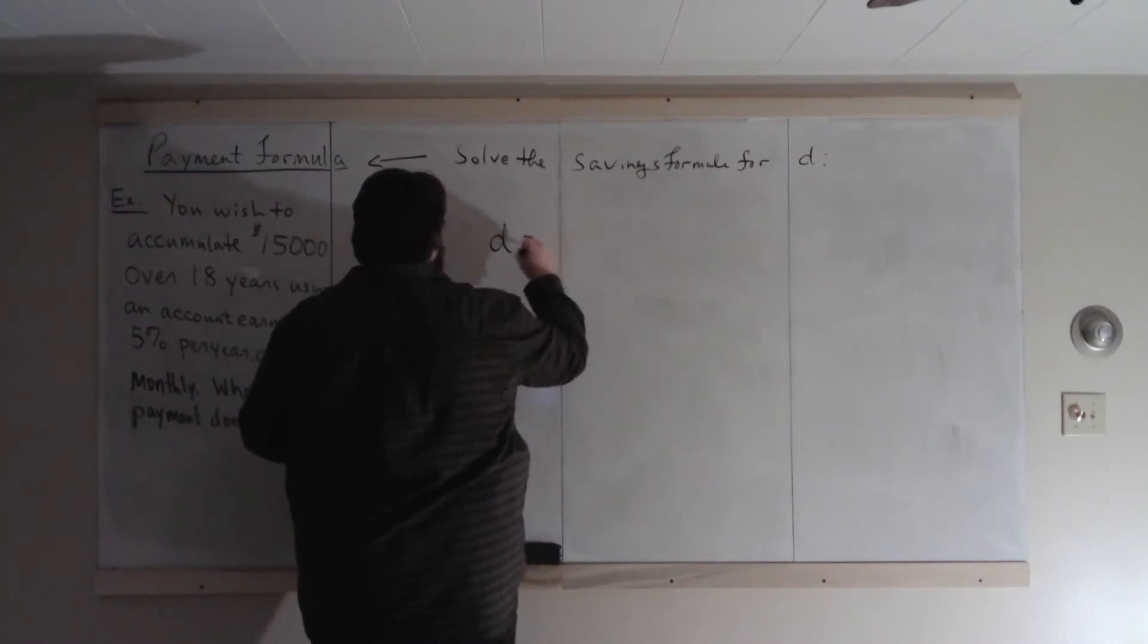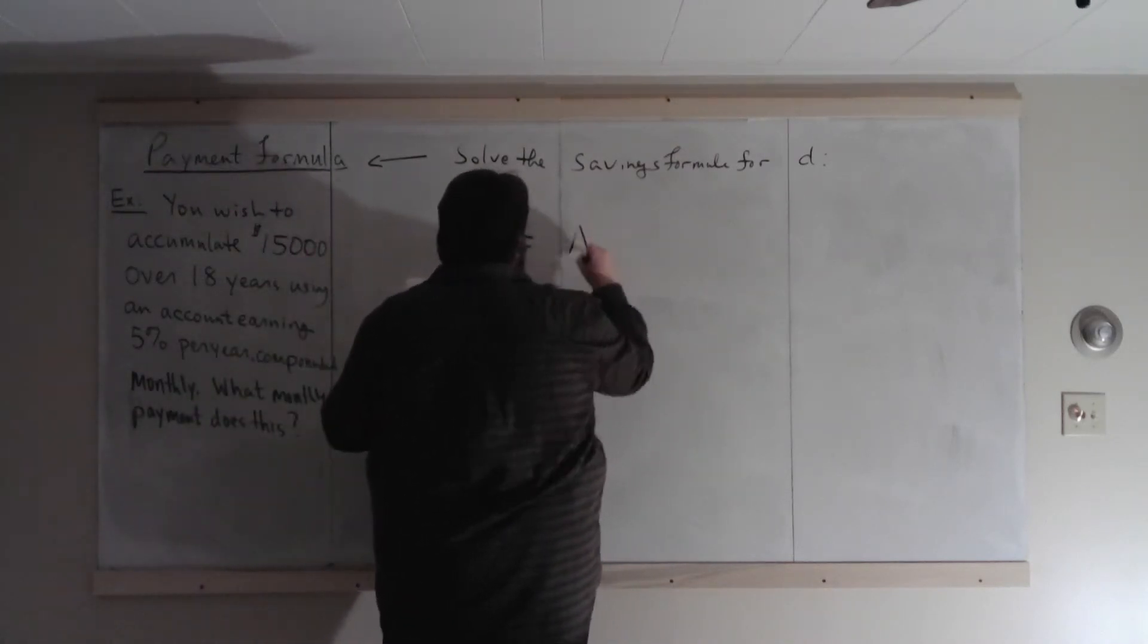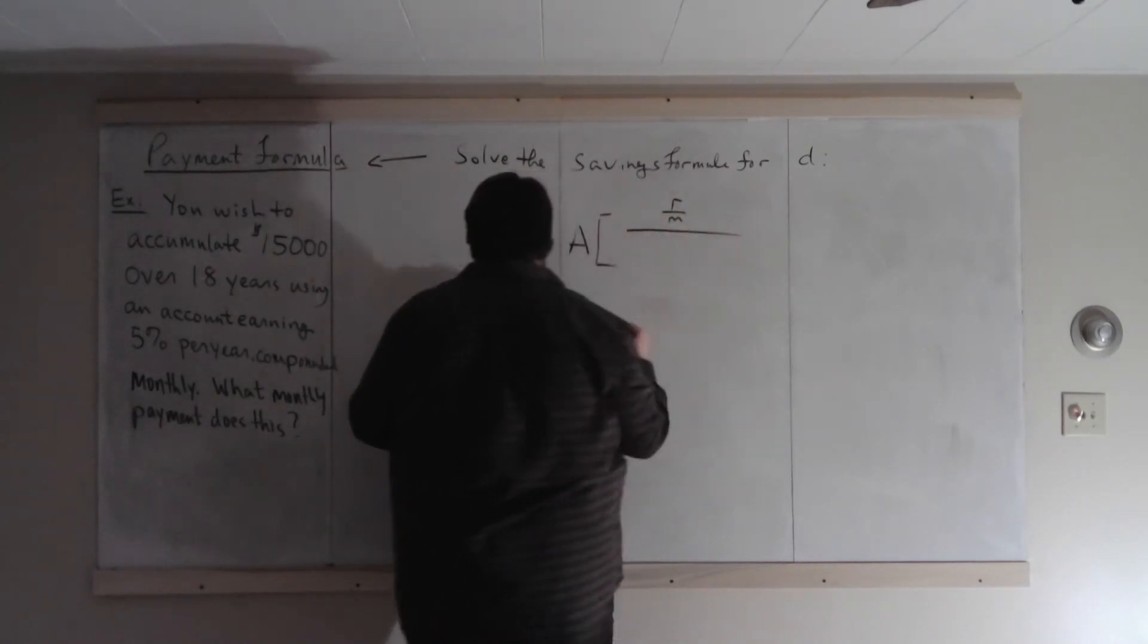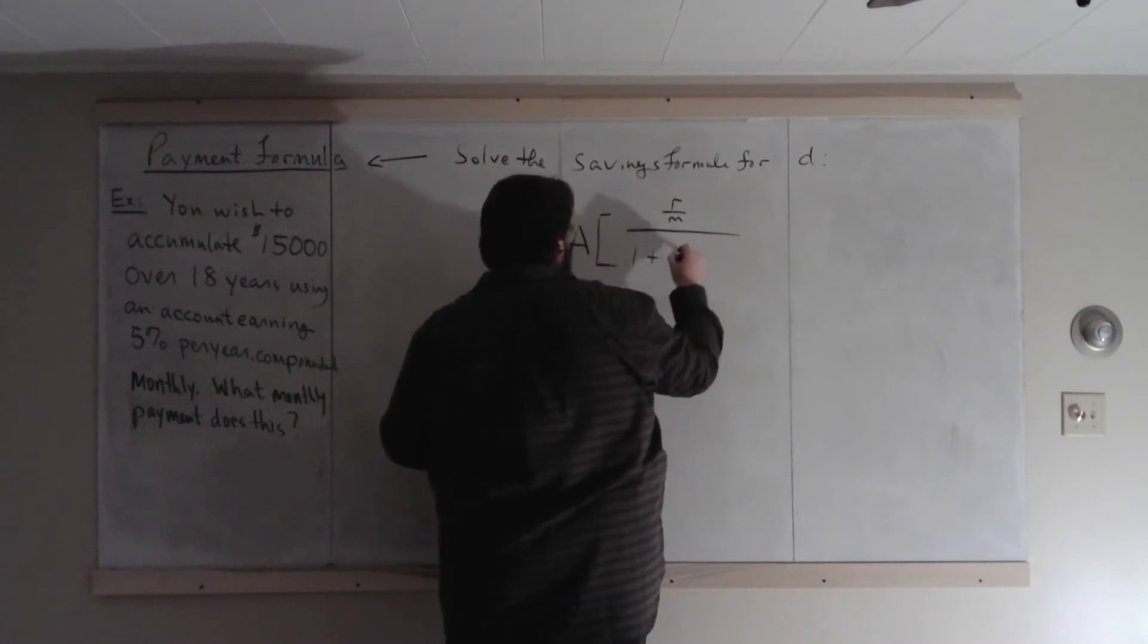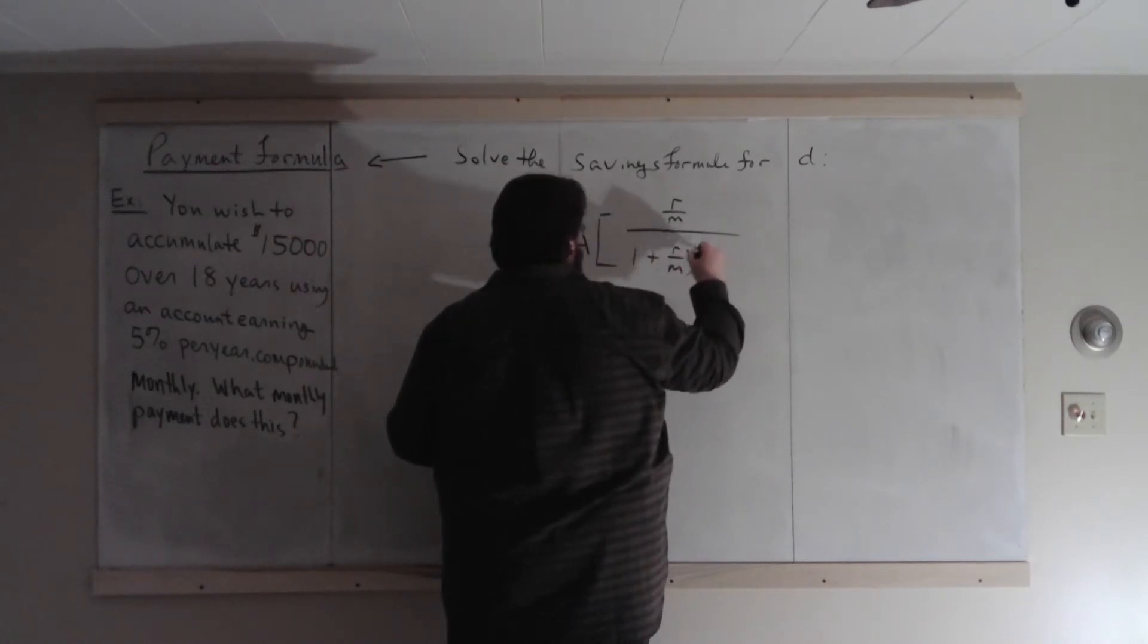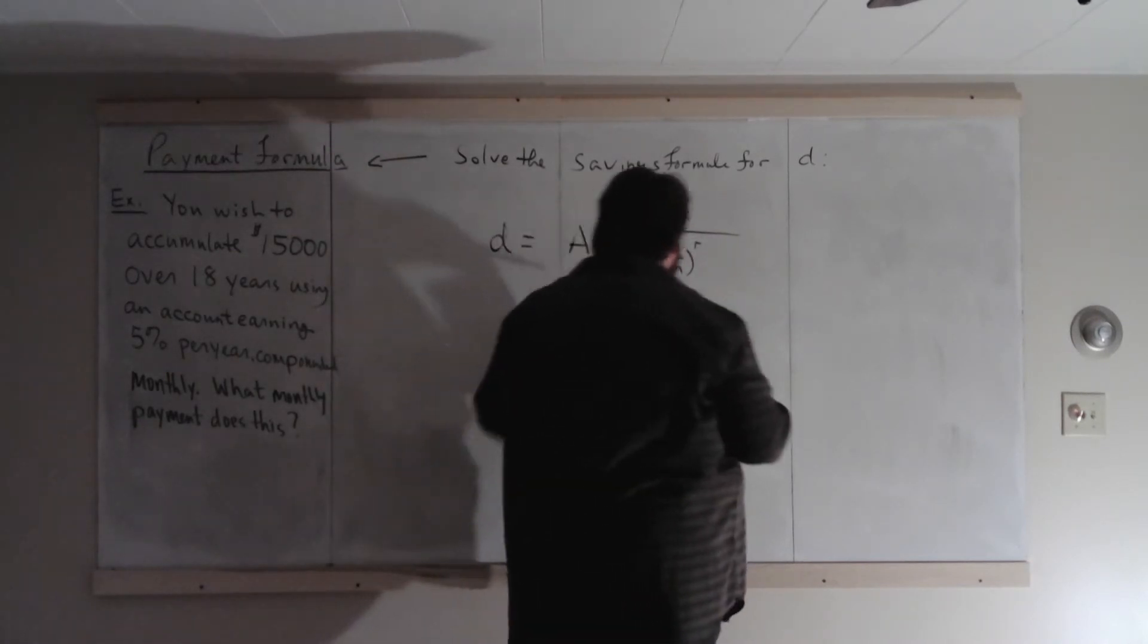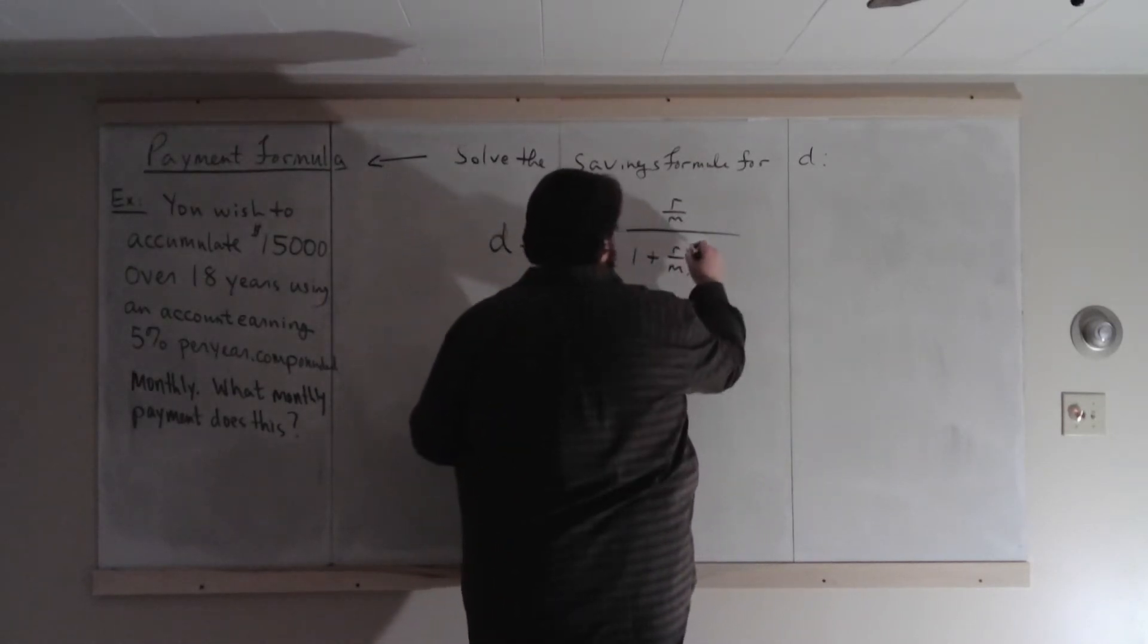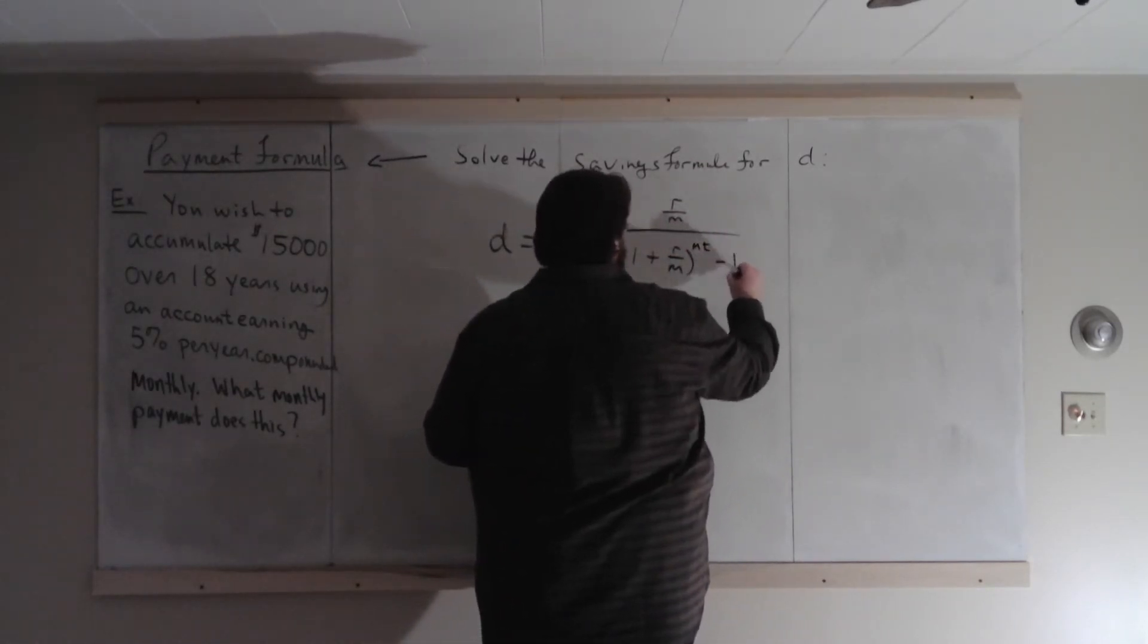D equals A times R over M on top, all over 1 plus R over M to the MT, not RT, to the MT minus 1.